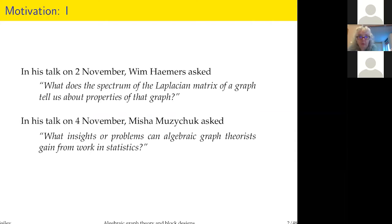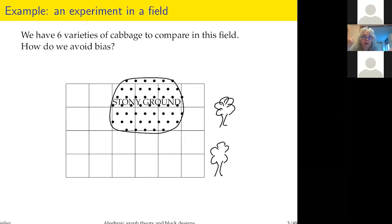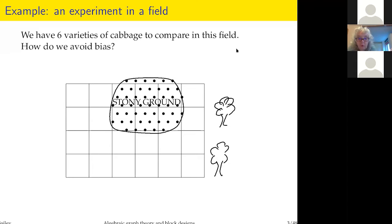I'll start with an example of an experiment. I want to compare six varieties of cabbage. This is a real field at an agricultural research station where I used to work. You can see here some stony ground, and that might affect the way the cabbages grow.